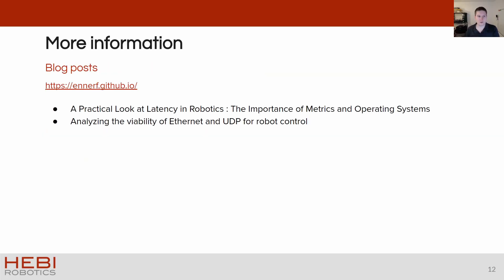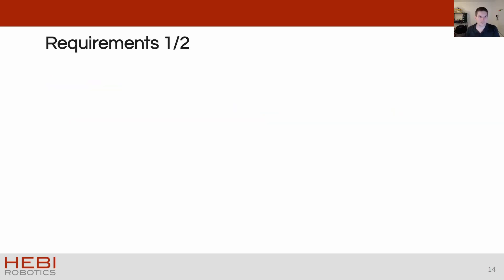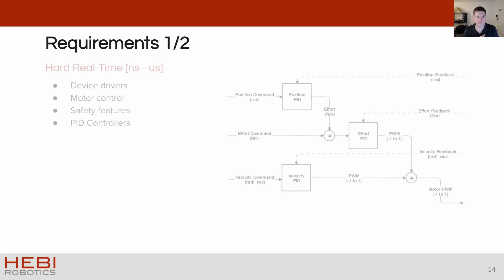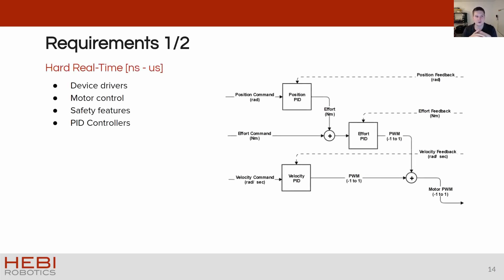You can find more details on the previous slides on my blog. In terms of what level of performance we actually need, we found we can split problems into two general sections. On the low end of the spectrum we have low-level physical interactions like device drivers, motor controllers, safety features, and PID loops. These can be in the microsecond to even sub-microsecond range and really have to be implemented on a real-time OS.